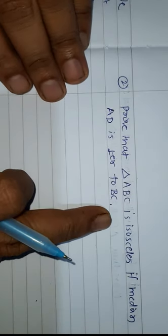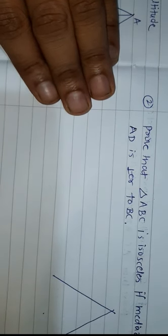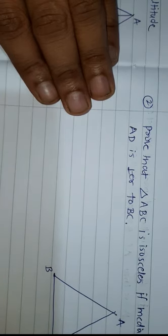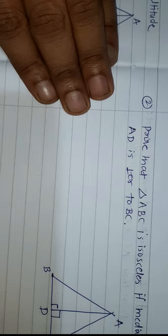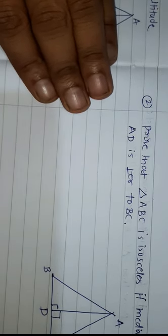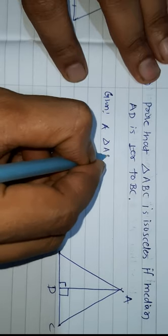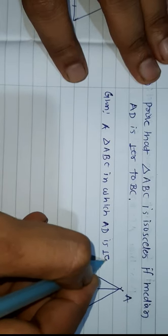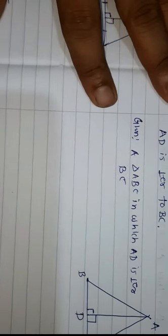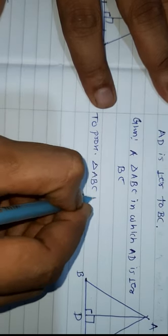Today's second question was: prove that triangle ABC is isosceles if median AD is perpendicular to BC. Here in triangle ABC, AD is the median perpendicular to BC — they have told us directly. Given: triangle ABC in which AD is perpendicular to BC. To prove: triangle ABC is isosceles.